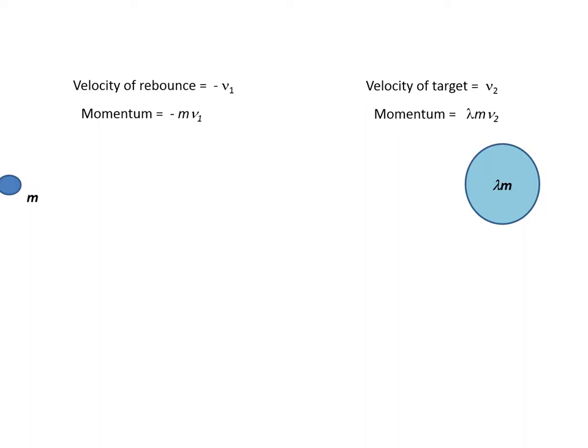On rebound, the velocity of rebound is minus V1 and momentum minus mV1 for the impactor. The negative sign is because of a change in direction on rebound. Then for the target, velocity is V2 and momentum is lambda mV2.